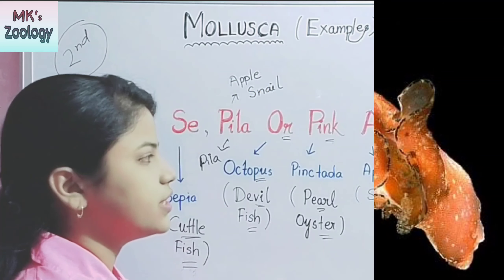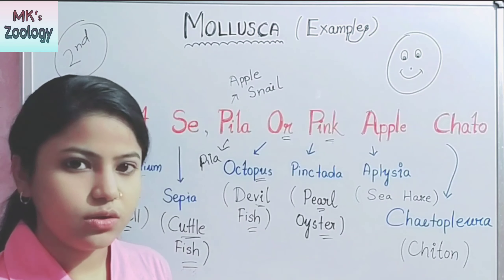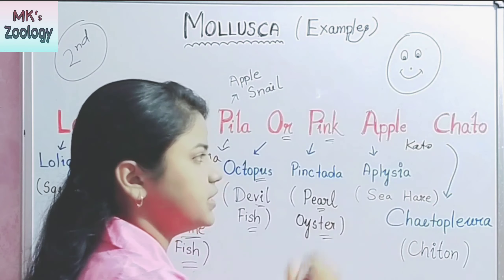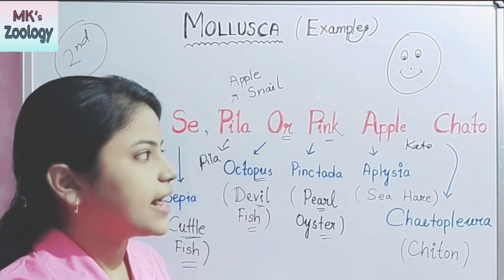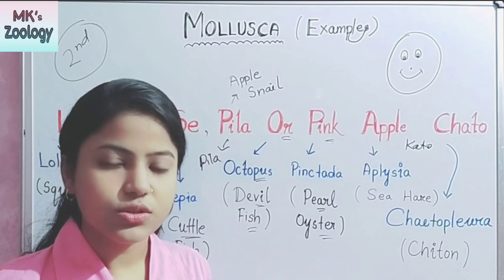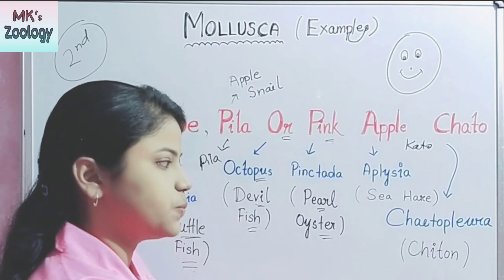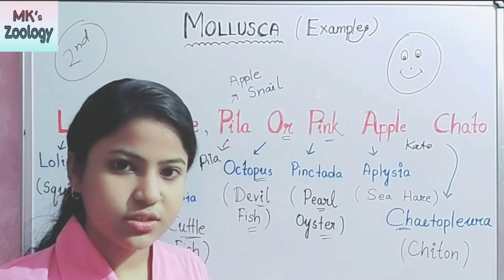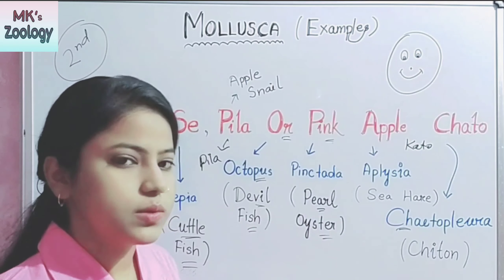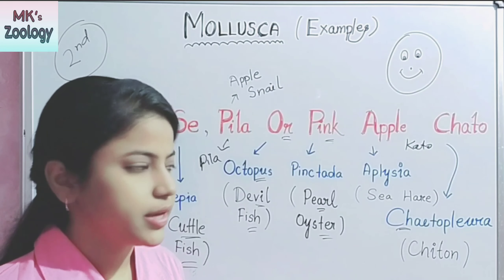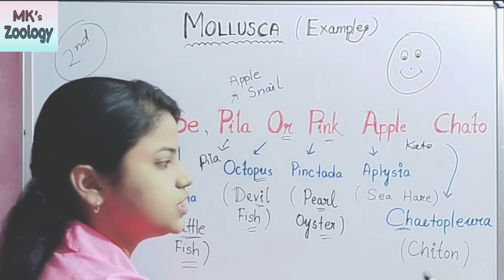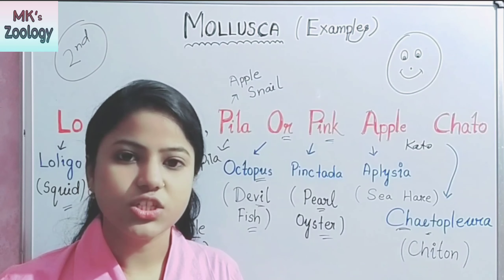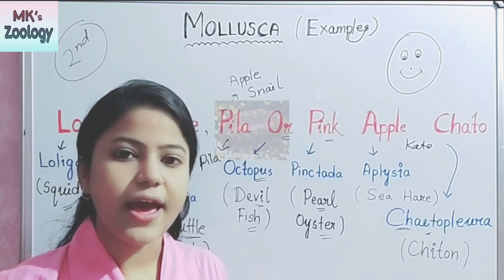The last one is "Kato", which refers to Chiton. Note that while "kato" is spelled K-A-T-O in the trick, the actual species name starts with C-H-I-T-O, so Kato is written as C-H-T-O to help you remember the species name easily. Chiton is also known as coat of mail shell, and its diagram is shown on screen.